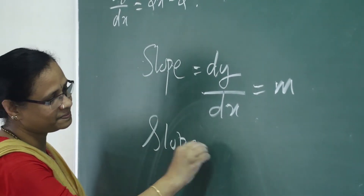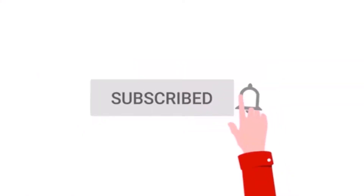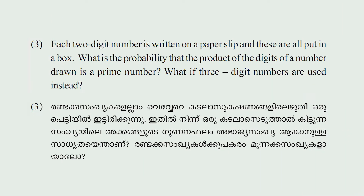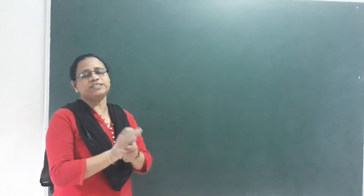Each two-digit number is written on a paper slip, and these are all put in a box. What is the probability that the product of the digits of a number drawn is a prime number? What if three-digit numbers are used instead?